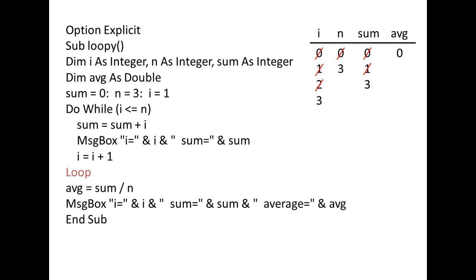When we reach the loop statement, we evaluate the test condition. Is 3 less than or equal to 3? This expression is TRUE, so we enter the loop again. Sum is assigned the current value of sum plus i, which is 3 plus 3 or 6. A message box then displays the current values of i and sum, which are 3 and 6. i is assigned the current value of i plus 1, which is 3 plus 1 or 4.